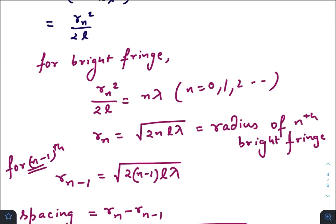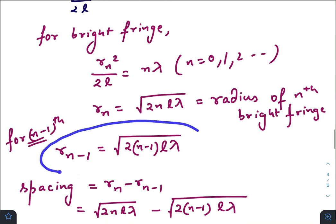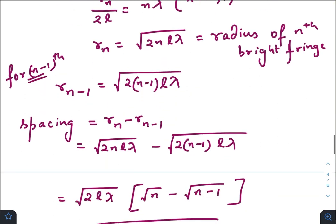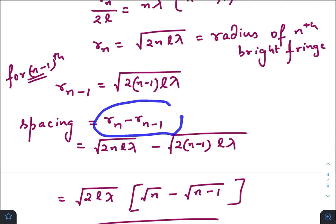Now this is the radius for the nth bright fringe, and similarly for n minus 1, the expression would look like this. So the spacing is r_n minus r_n minus 1.